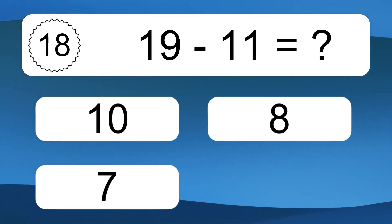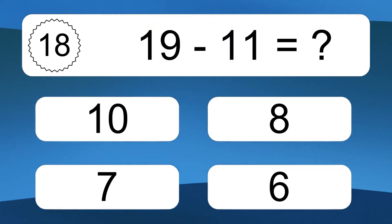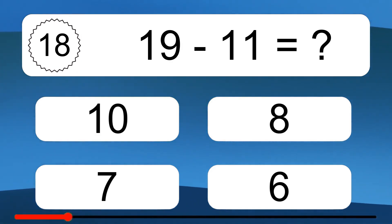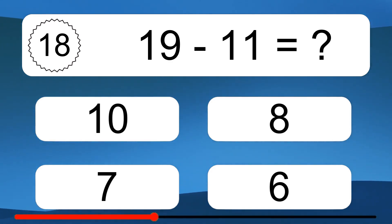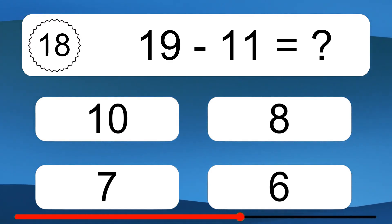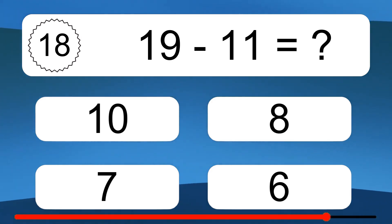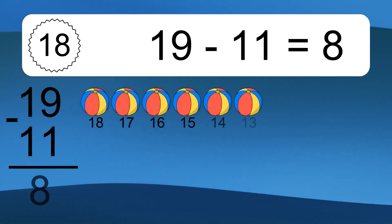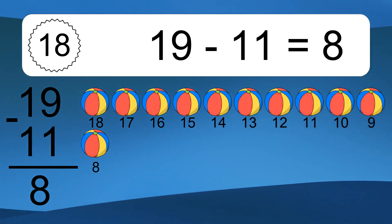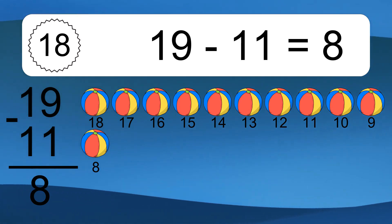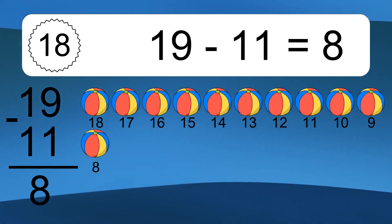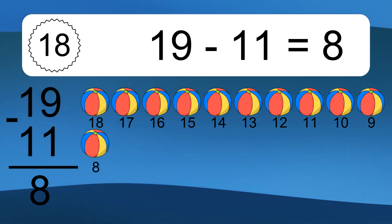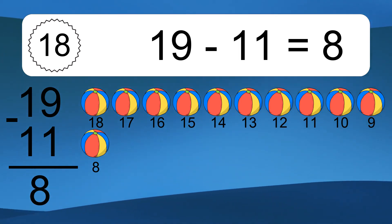Nineteen minus eleven equals what? Nineteen minus eleven equals eight. Let's count it: eighteen, seventeen, sixteen, fifteen, fourteen, thirteen, twelve, eleven, ten, nine, eight.